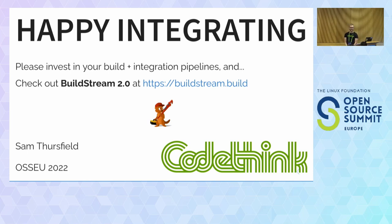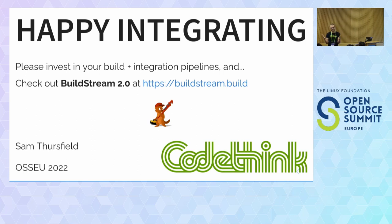Question: have we tried building Chromium with BuildStream? Chromium we haven't, but WebKit we certainly have — the Free Desktop SDK includes WebKit. On x86 the results are great. On ARM it takes a while. So the experience is good. I wouldn't recommend it for developing WebKit at this stage because you don't want to rebuild everything every time you make a change, but for integrating something like WebKit or Chromium it works well. The key is having a fast enough build machine, and both GitLab CI and the RE API can help.